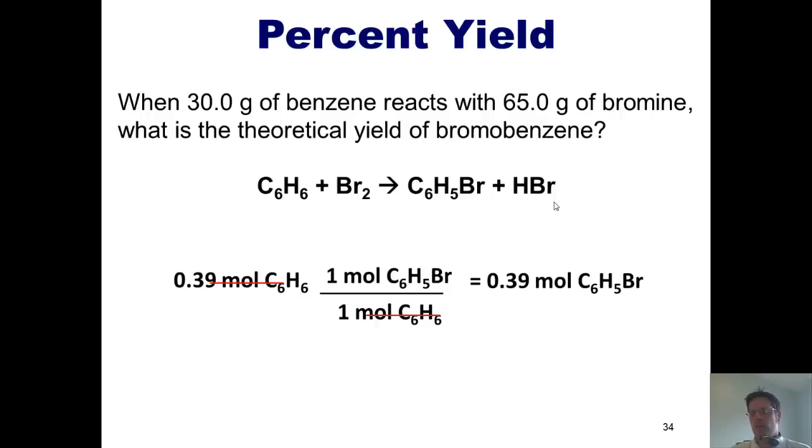So theoretically, if I took 0.39 moles of benzene and reacted it with this given amount of bromine, which is 0.406 moles of bromine, I should get 0.39 moles of bromobenzene.